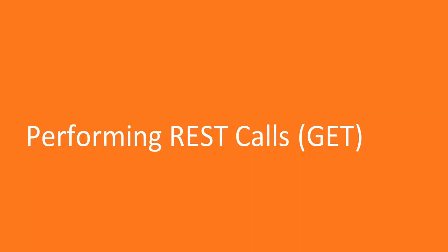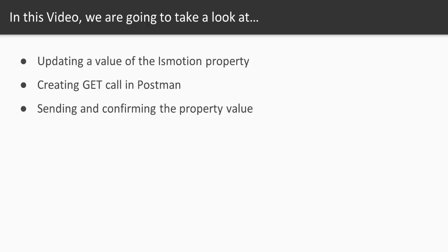Hello there, welcome to this video on performing REST calls. We're gonna get started with the GET request. First, what we're gonna do is manually update the value of the is_motion property in the IoT platform, then build a GET request from Postman, send it across to the IoT platform, and see if we are getting a value back in Postman. This way you can simulate an IoT device trying to get a value from the IoT platform.